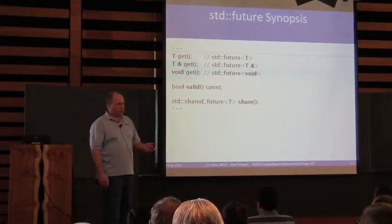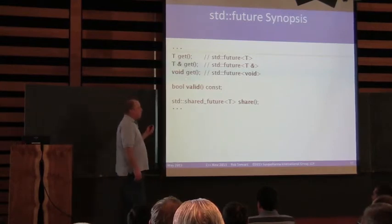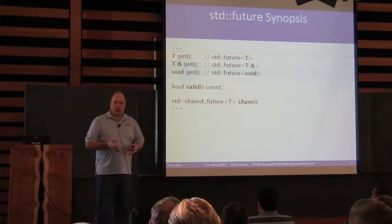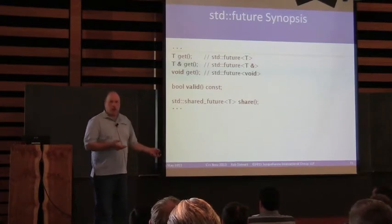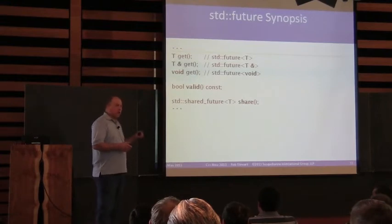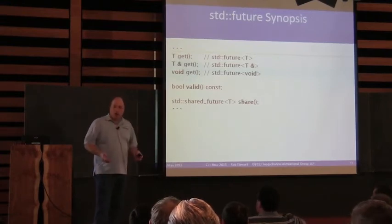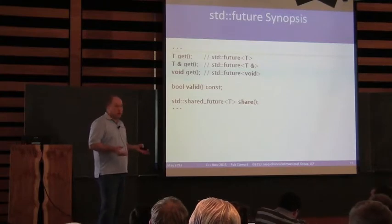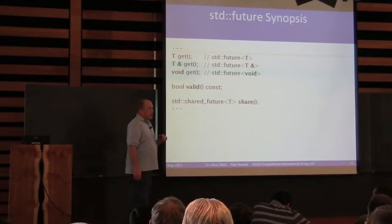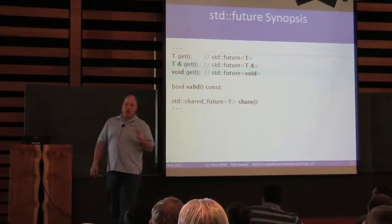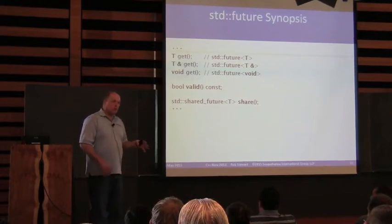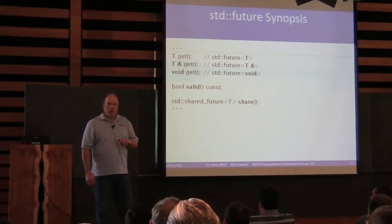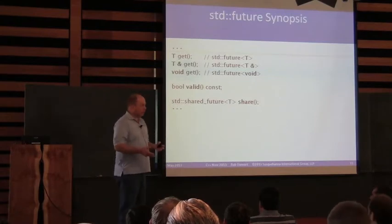You might think: why would I call get to get nothing? The purpose of calling get is to retrieve the result that the asynchronous provider has marked as being ready. In the case of void, it's the same as calling wait — you're saying let me know when the result is ready, i.e., when the asynchronous task is finished. Another interesting aspect of calling get is if the asynchronous task throws an exception, that exception is saved in that shared state. When you call get, that exception will be re-raised — you'll get the exception as though you had called that asynchronous task directly.